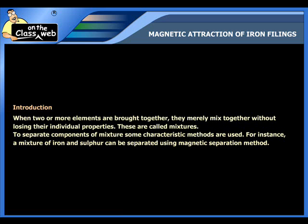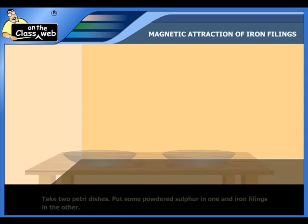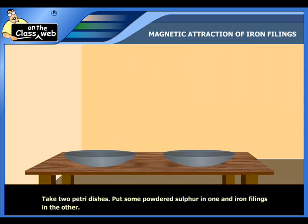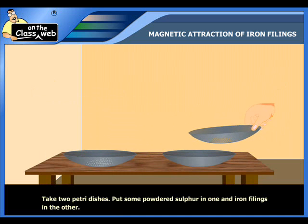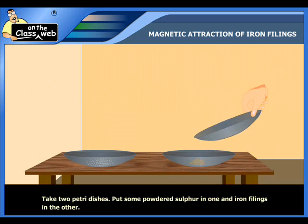For instance, a mixture of iron and sulfur can be separated using the magnetic separation method. Now, let's see the magnetic property of iron. Take two petri dishes. Put some iron filings in one and powdered sulfur in the other.